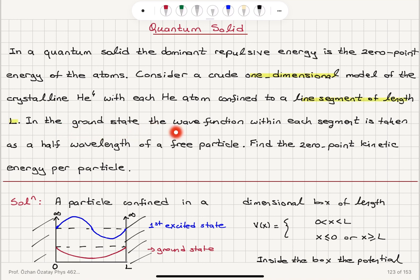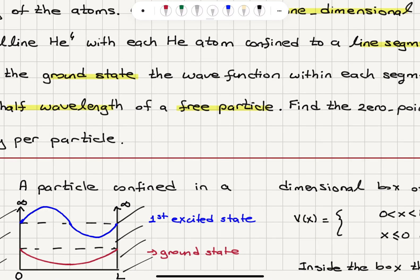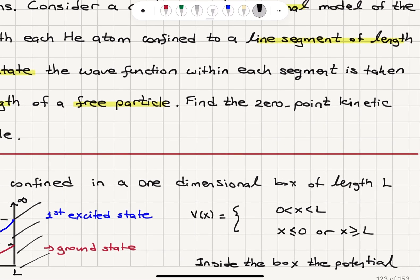In the ground state, the wave function within each segment is taken as a half-wavelength of a free particle — so it's a free particle in a one-dimensional box of length L. The ground state corresponds to half a wavelength. Find the zero-point kinetic energy per particle. We have a particle confined in a one-dimensional box of length L.